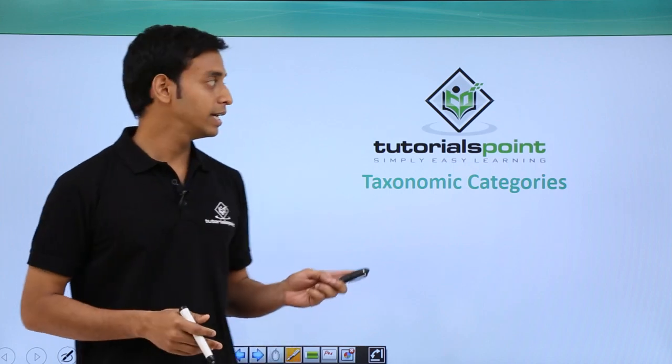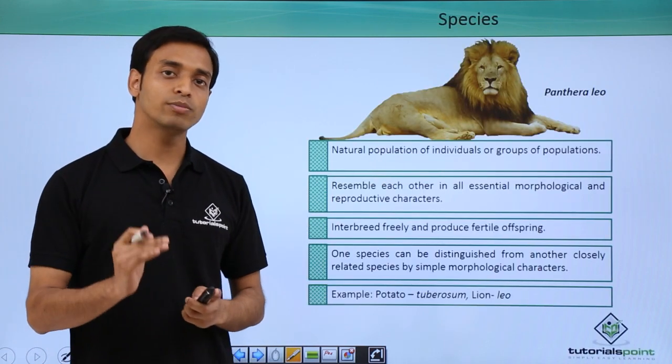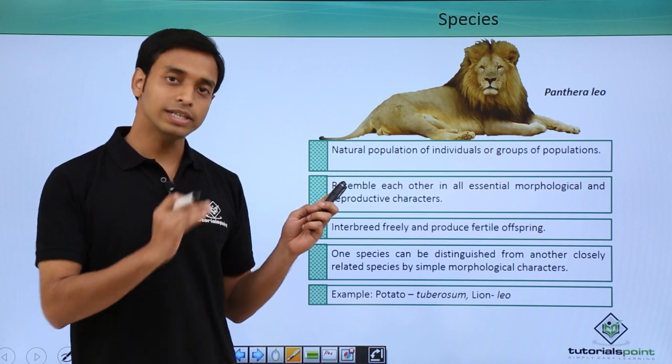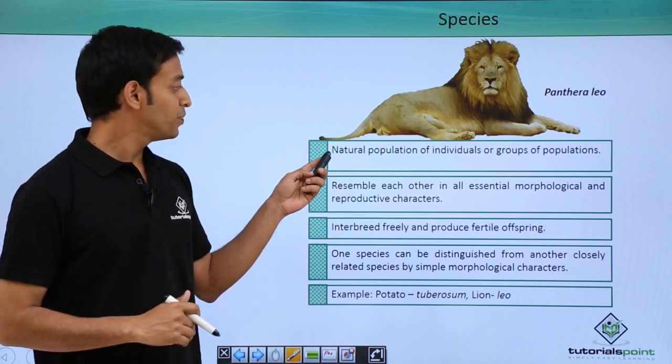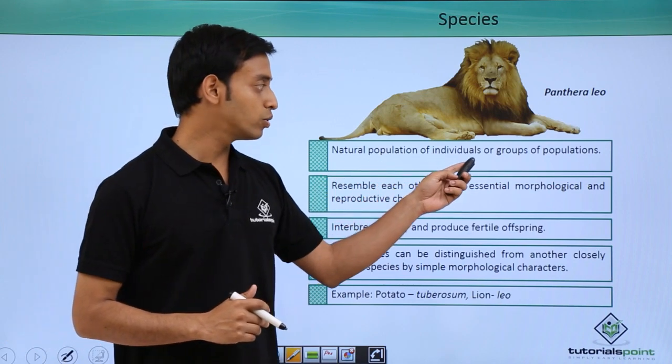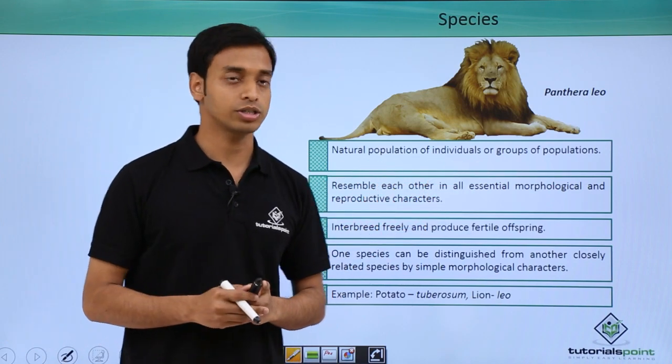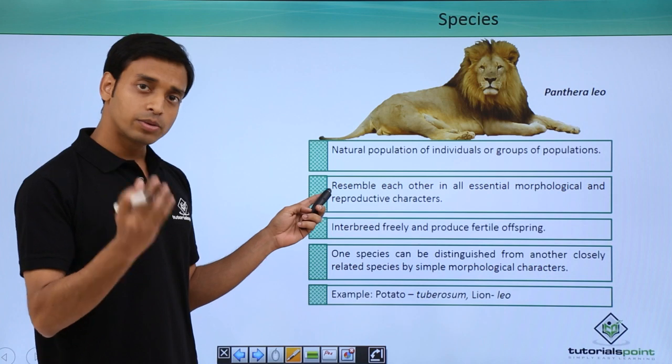The first category which we are going to discuss is species. This is the lowermost or the lowest category of the taxonomic categories. Species are basically natural populations of individuals or groups of populations. Organisms in a particular species resemble each other in all essential morphological as well as reproductive characteristics.